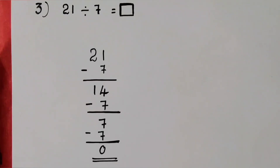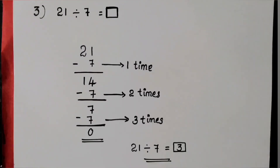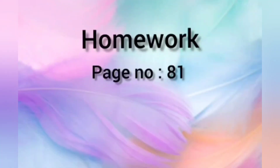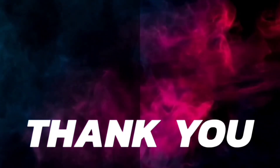So we reach 0. Now we count how many times we subtracted 7 from 21 to get 0. We subtracted 7 from 21 three times, so our answer is 3. So 21 divided by 7 is equal to 3. Today's homework is page number 81, exercise 3.1. That's all for today's class, thank you.